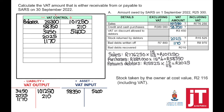Stock taken by the owner at cost value R2,116, including VAT — here we have a calculation again. They provided the amount including VAT, so to find the VAT amount we say times 15 divided by 115. Because the owner took the stock for personal use, VAT output will be credited. If VAT output is credited, the VAT control account will be credited.